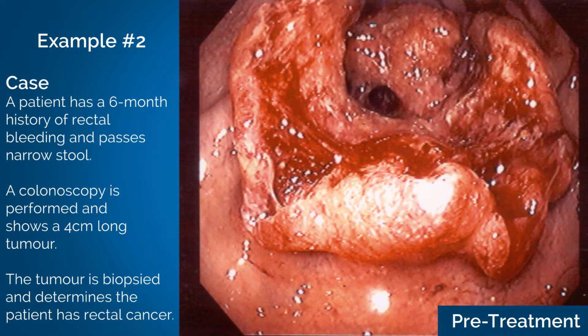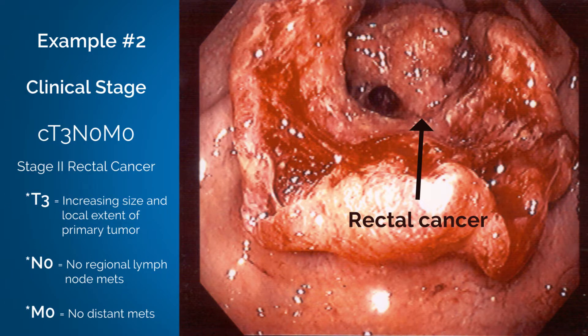Let's look at another example. A patient has a 6-month history of rectal bleeding and passes narrow stool. A colonoscopy is performed and shows a 4-centimeter long tumor. The tumor is biopsied and determines the patient has rectal cancer. This patient is diagnosed with a clinical classification of cT3N0M0, which is stage 2 rectal cancer.